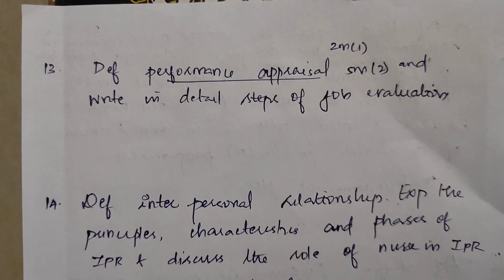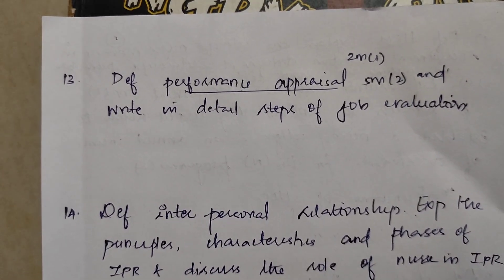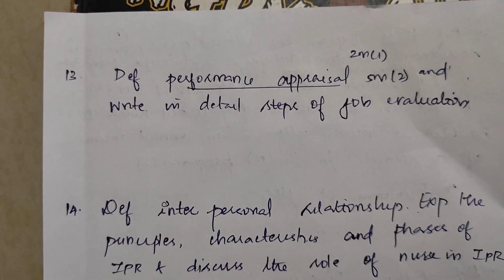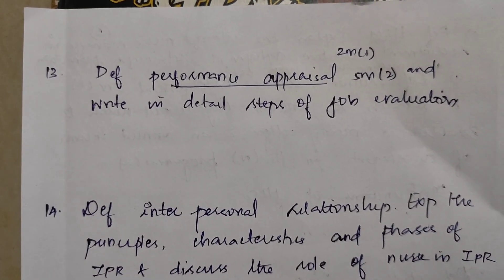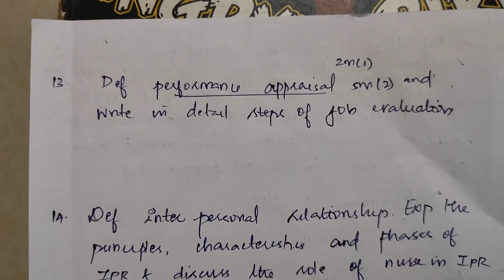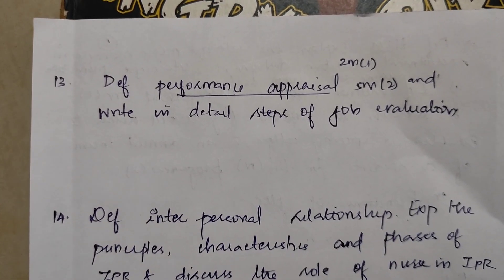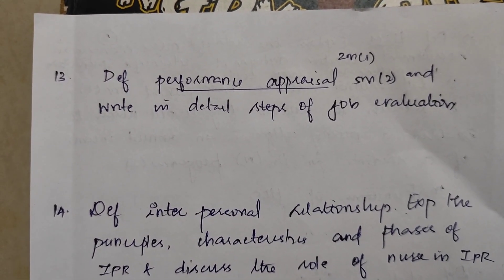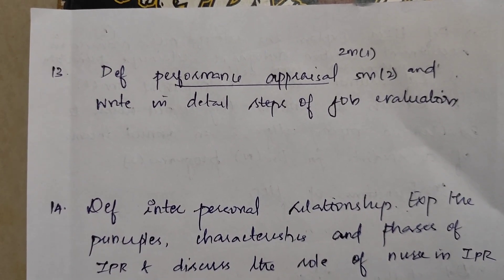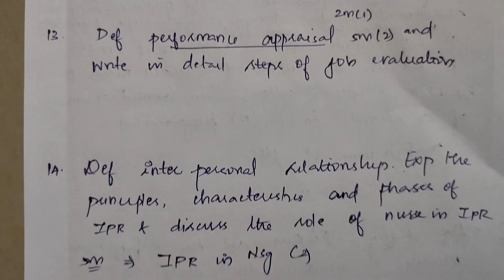Next, define performance appraisal and write in detail the steps of job evaluation — 15 marks. In 5 marks, performance appraisal appears two times.